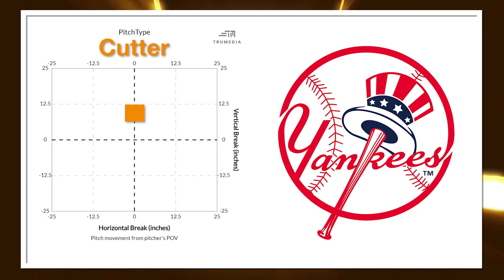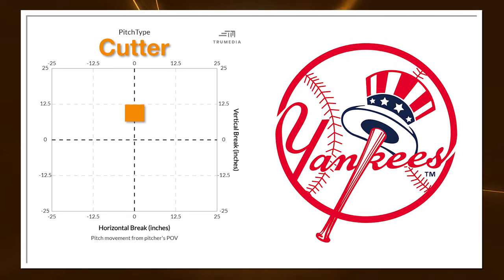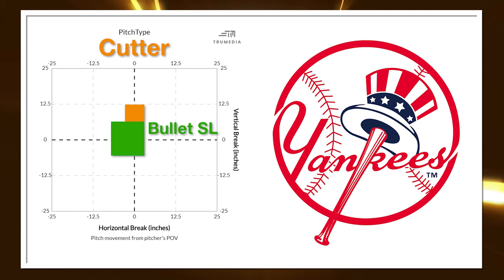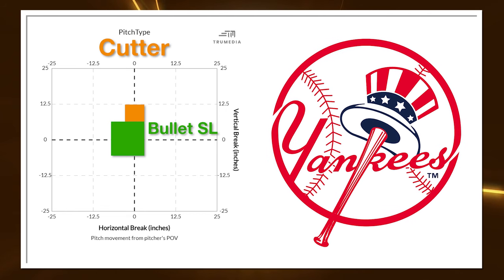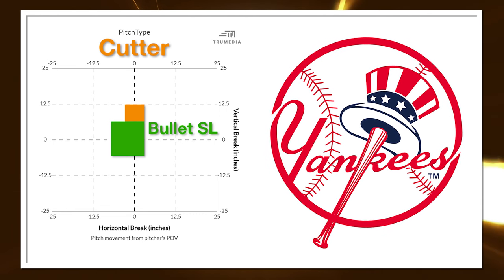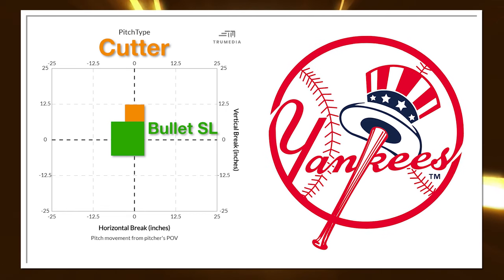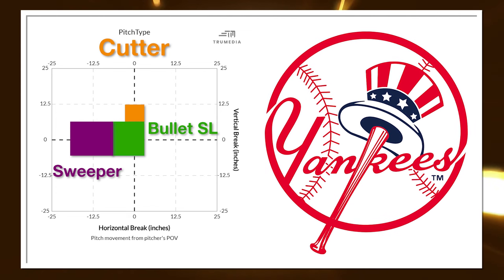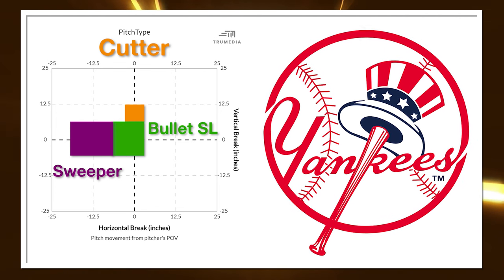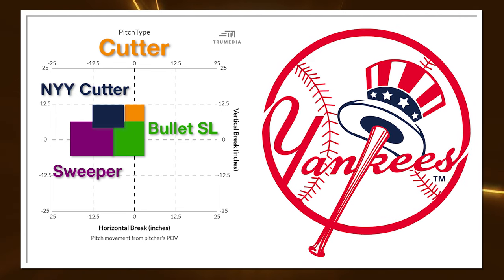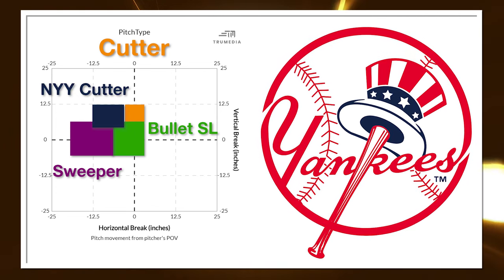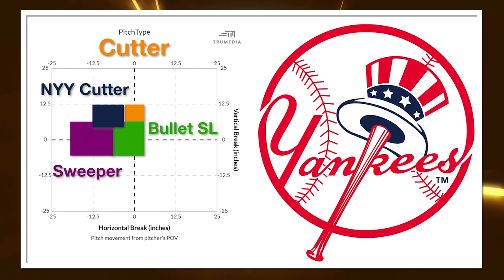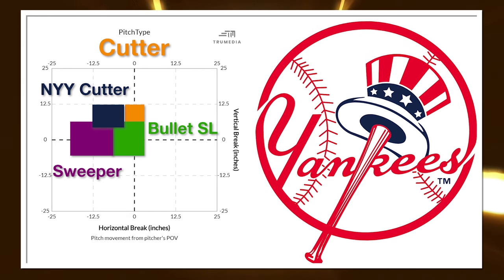Then there's the bullet tight gyro slider, which is usually down here — it has more drop than the standard cutter. And then you have sweeper sliders which have more glove side movement, so they're out here. The Yankee cutter nestles itself over here in this relatively uninhabited part of our pitch plot for right-handed pitchers.